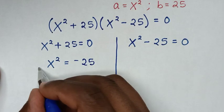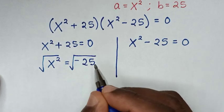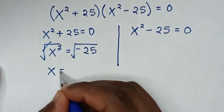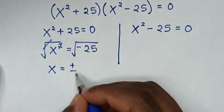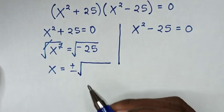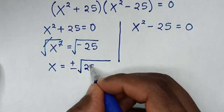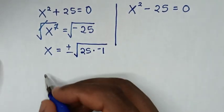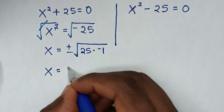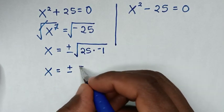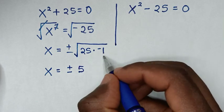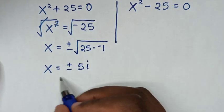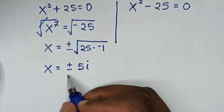We apply the square root to both sides. The square root of negative 25 is the same as the square root of 25 times negative 1. So x equals plus or minus 5 times the square root of negative 1, which is i. Therefore x equals plus or minus 5i, giving us two solutions from this first case.